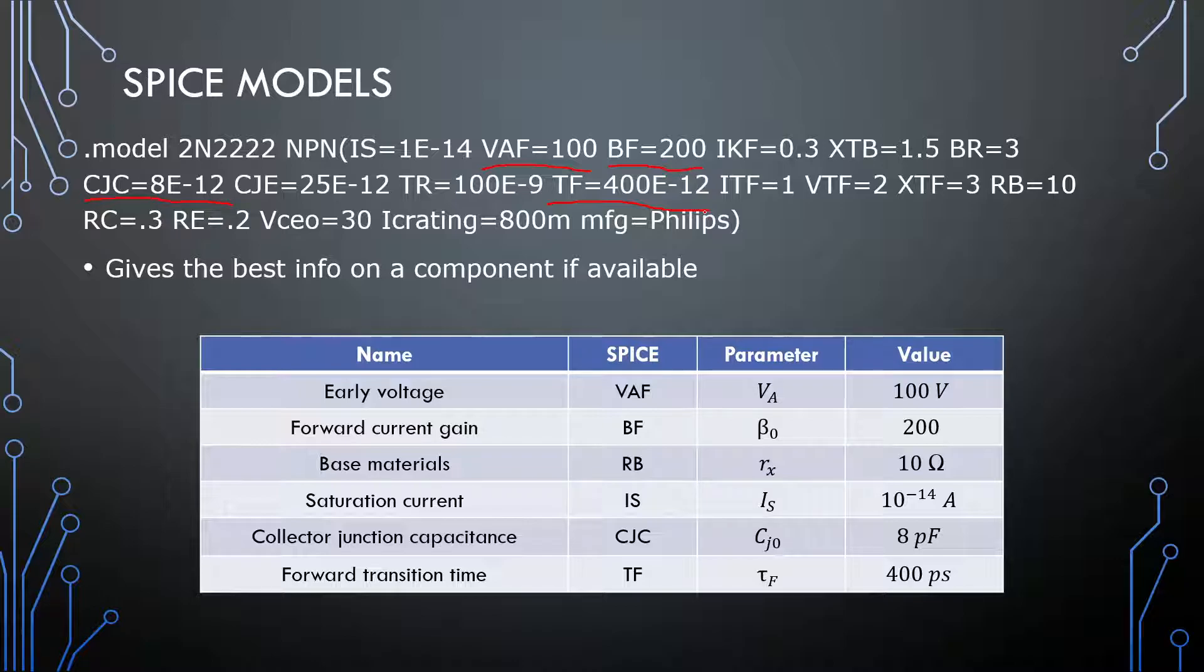Then, we are interested in this TF right here. That's the forward transition time. That is probably the main one that we want from this model. That will give us the approximate value of our CPI value. And then, lastly, over here, we have RB, and that is our base materials. You'll also find things in the SPICE model, like the maximum current rating and maximum voltage rating. And also, if it's from different manufacturers. I chose a Philips data sheet because I have a Philips SPICE model here. I think, for one, in Altispice is NXT. Depend on manufacturer what you'll get.